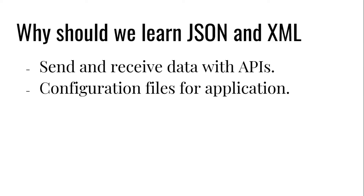The second reason is that JSON and XML are used as configuration files for an application. Configuration files have different sets of values for different environments. When we start coding, we start from the development environment, then move the code to QA for testing, and finally it moves to production. For example, the database connection has a different hostname and port in all three environments, and some specific files may have different names or locations in different regions.